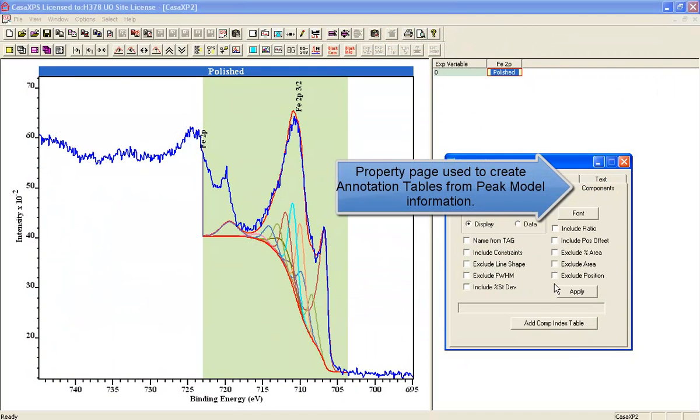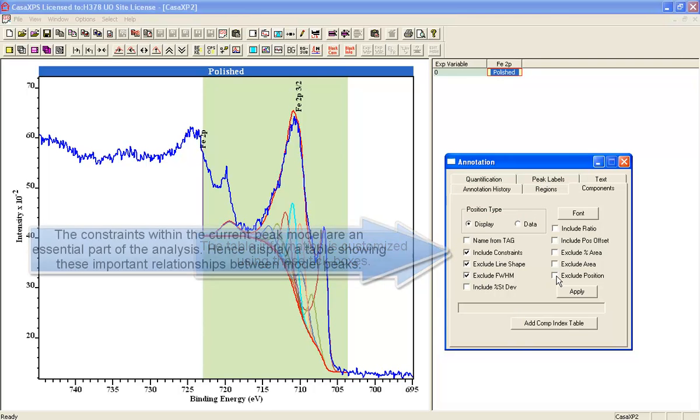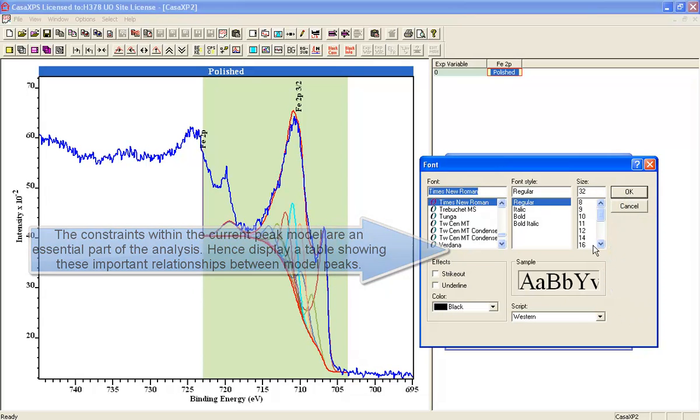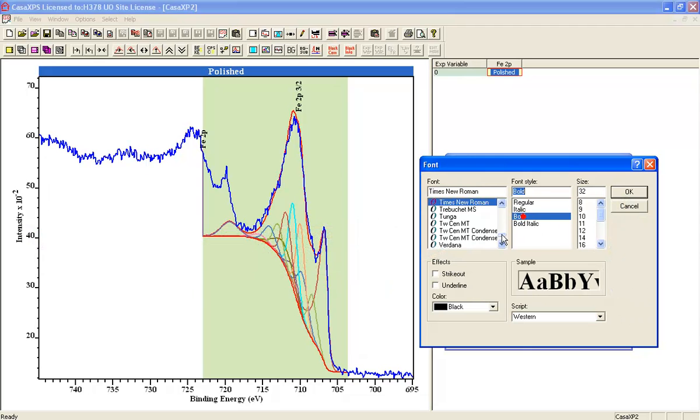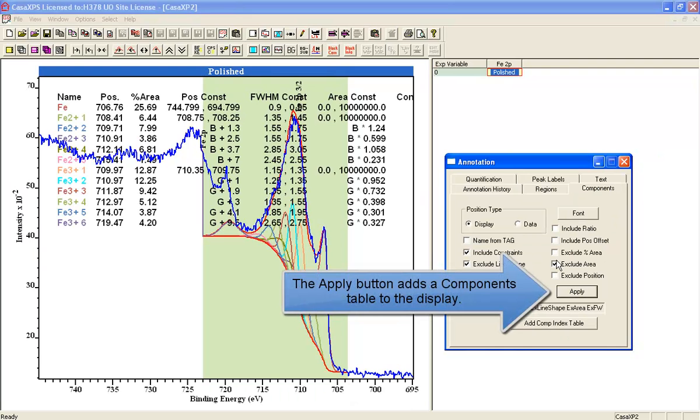Right now all these component peaks are apparently independent and you can see there are many of them. But we can begin by putting up a quantification table that includes the constraints, and this is on the components property page.